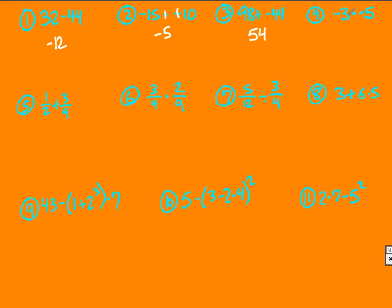Multiplication. Negative times negative will give you a positive. 3 times 5 gives you 15. Positive 15 is your answer.